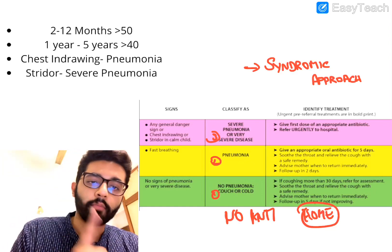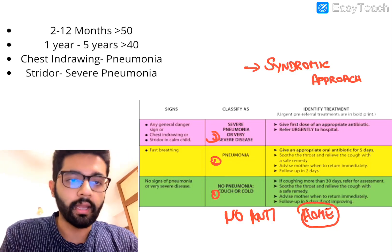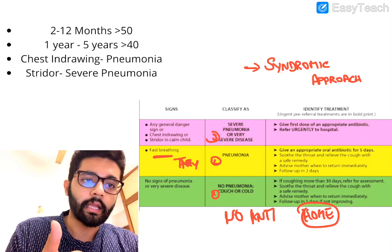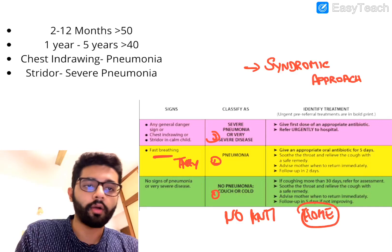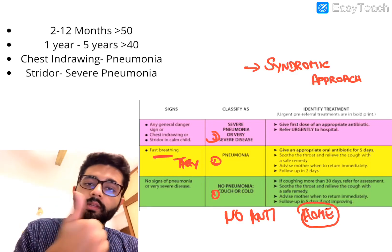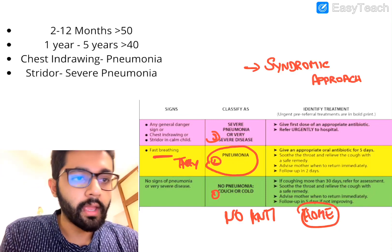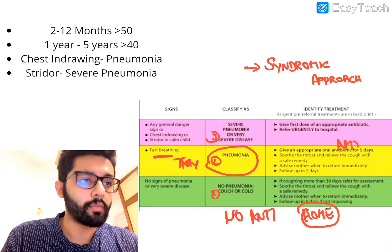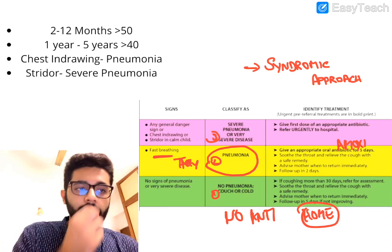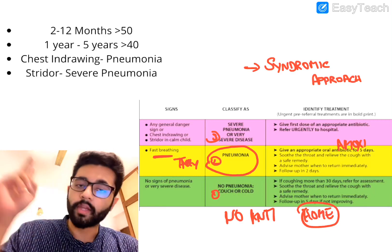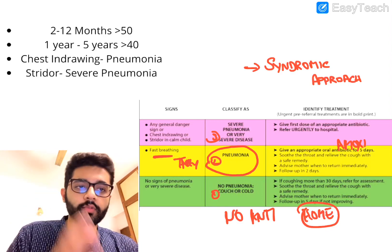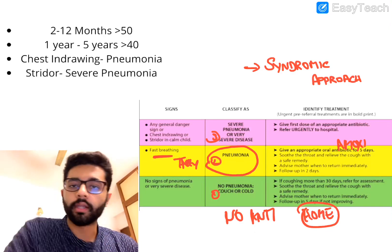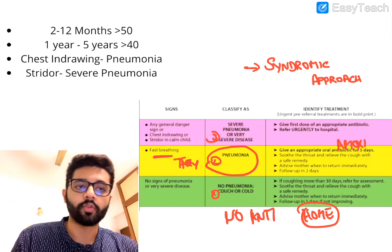The second category is yellow or pneumonia — cough with tachypnea, indicative of a lower respiratory tract infection. Oral antibiotics are given, usually amoxicillin for five days, and the patient is treated at home with review after two days. There is no hospital admission for this category unless danger signs are present.